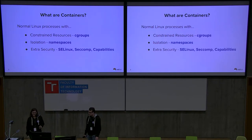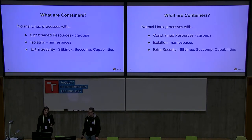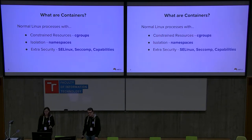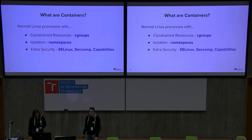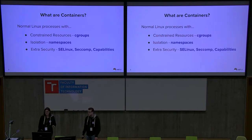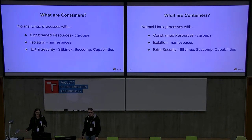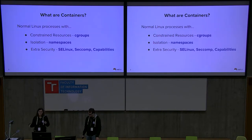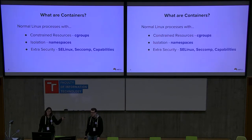Isolation is done through Linux namespaces. There are six namespaces in Linux: IPC, UTS, PID, mount, network, and user namespace. Namespaces give you an isolated view of the system. If you're in a PID namespace inside a container and you run PS, you'll only see the processes running in that PID namespace. You won't be able to see any processes running outside the PID namespace.